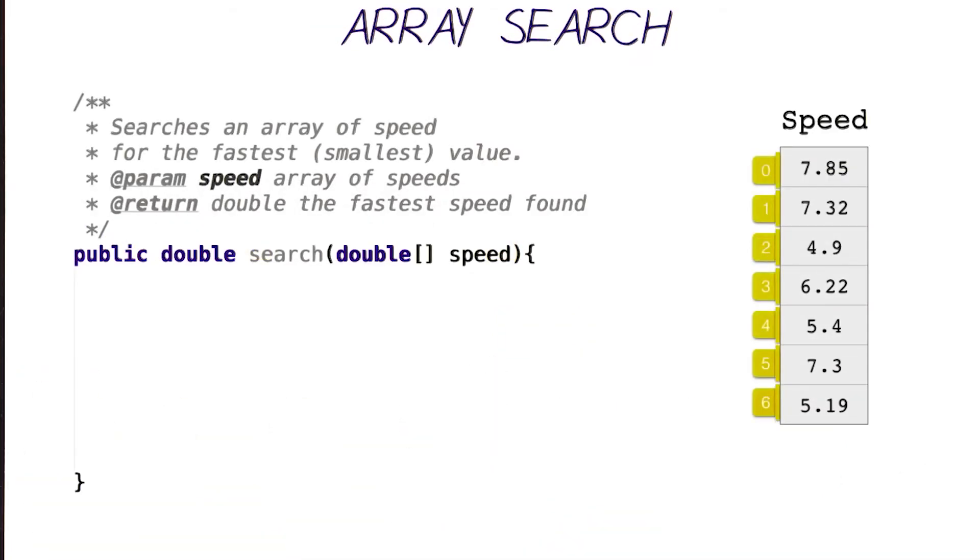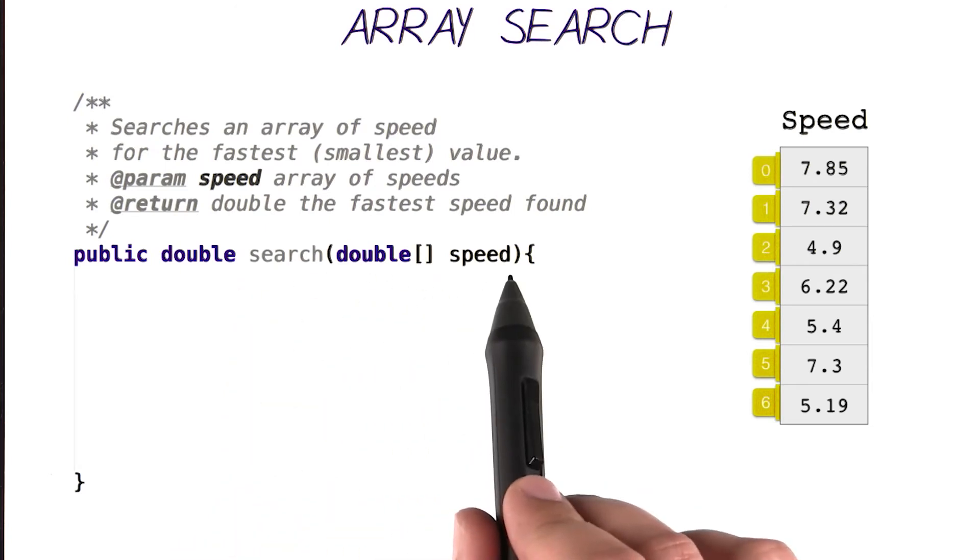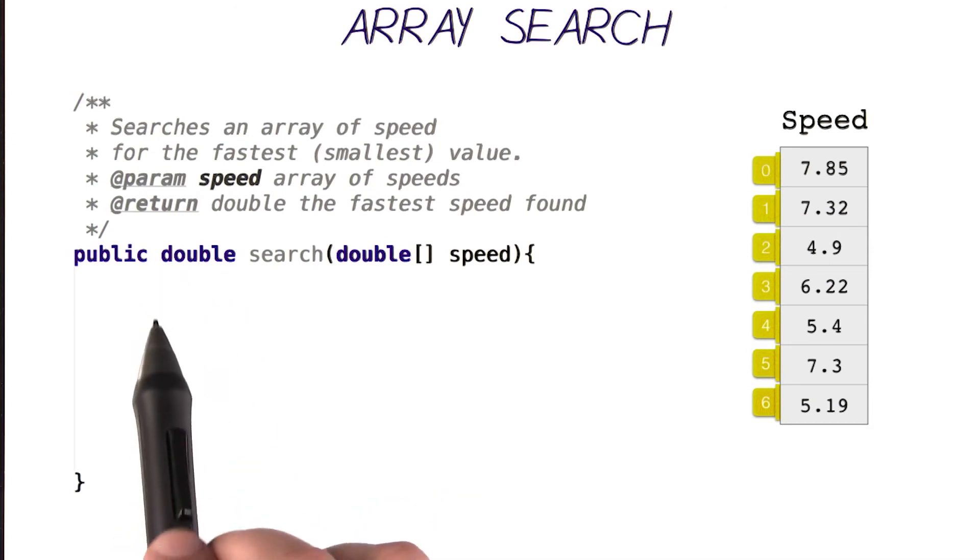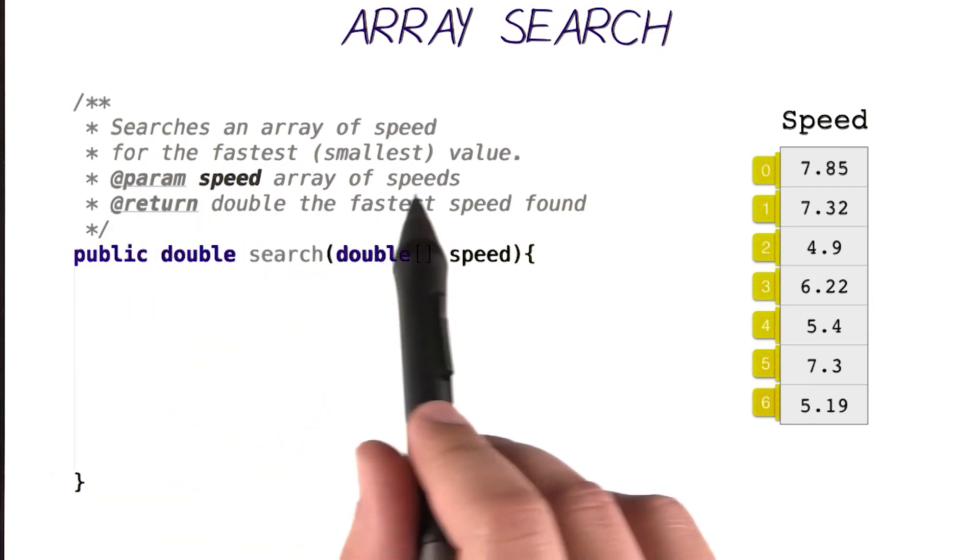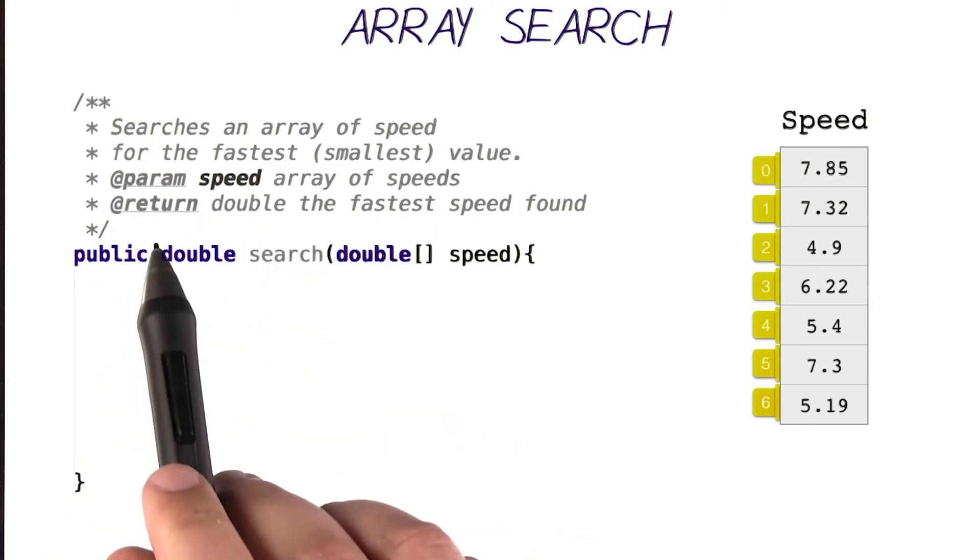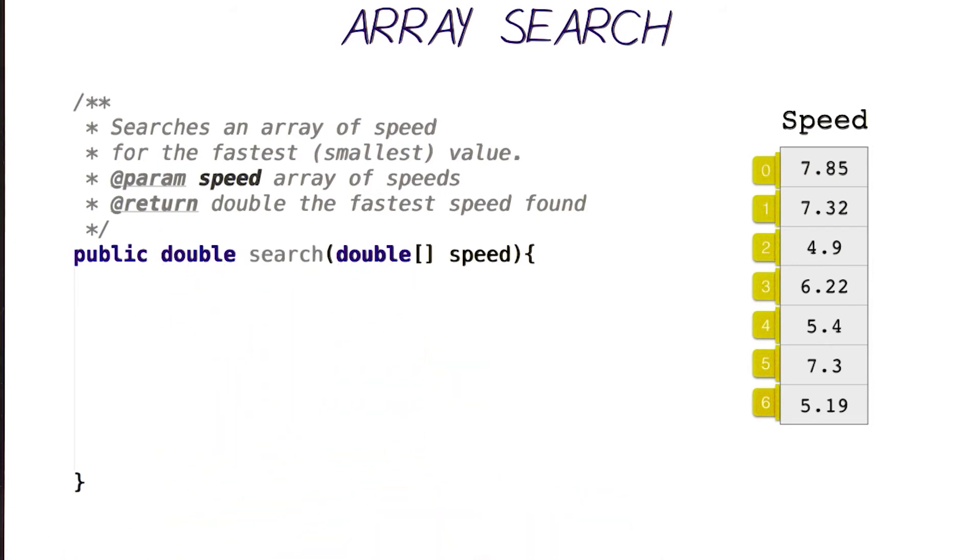So let's see how we can implement this in Java. Assume we want to write it in a function like so. A function called search that accepts the parameter, an array of doubles called speed, and returns a single double that is the fastest or the smallest value in this array. So the parameter is the speed array, which is an array of doubles, and it returns a double, which is the fastest speed found. I'll just leave this here as an example for us to trace later.